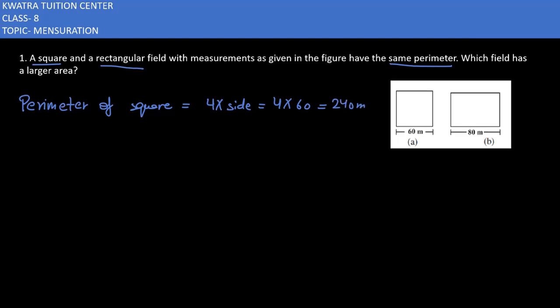Now we can find the perimeter of the rectangle. What is the perimeter of a rectangle? It is 2 into length plus breadth. The length is already mentioned — it is 80. But the breadth is not mentioned, so what do we need to find out? That is X.